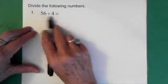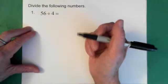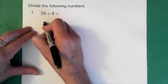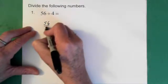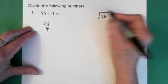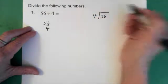First question: fifty-six divided by four. We've already determined that this is going to look like this: fifty-six divided by four.